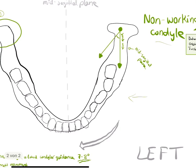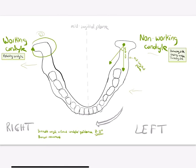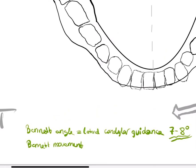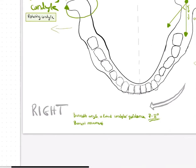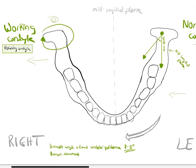So what is the Bennett movement? The Bennett movement is a bodily lateral movement of the rotating working condyle.